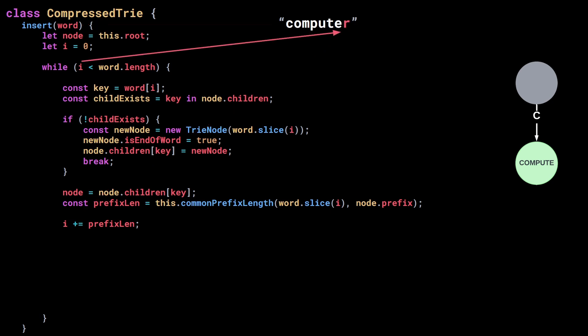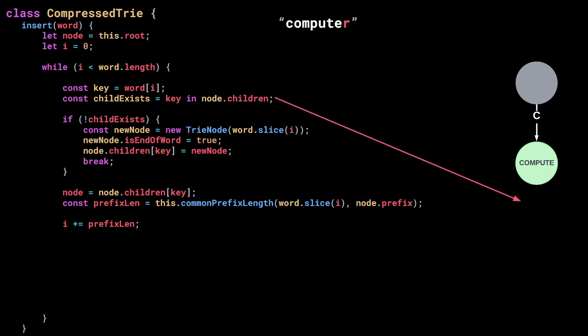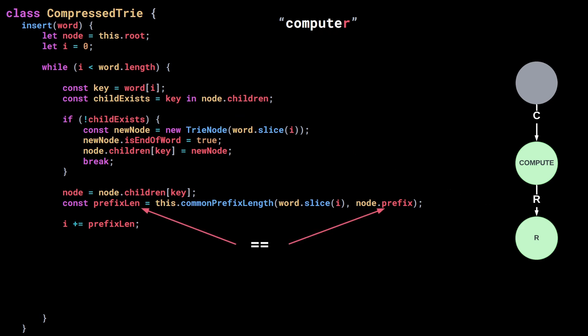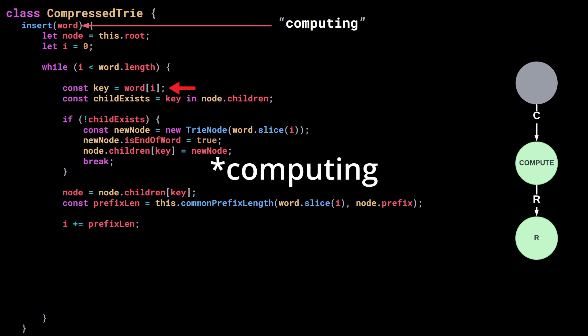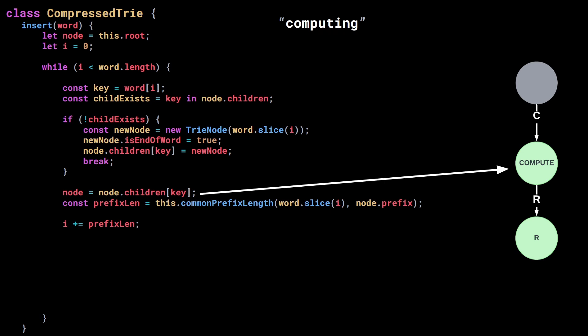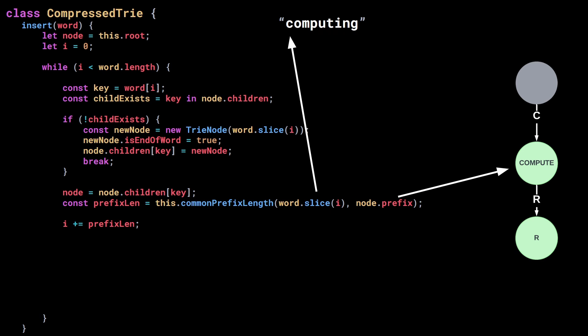Going back to inserting 'computer': after updating i, we go back to the beginning of the while loop. The last letter R is stored in key. The node has no children, so we enter the if block and create the new child. We handle the case when the common prefix length equals the length of the node's prefix. This length cannot be greater or zero, but it can be smaller. For example, let's say we are inserting the word 'computing'. We take the first letter C and find a child, so the if is skipped. We compute the length of the common prefix, but 'compute' and 'computing' only share 6 common letters. So we are not going to be able to add a child to the compute node like we did for 'computer' — instead, we need to split the compute node.